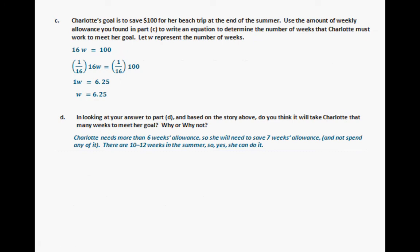For part C, we take this information and write a different equation, 16W equals 100, and then again, they just multiply by the reciprocal. You can just show that you're dividing by 16 on both sides, and W equals $6.25. Or I'm sorry, 6 and a quarter weeks.